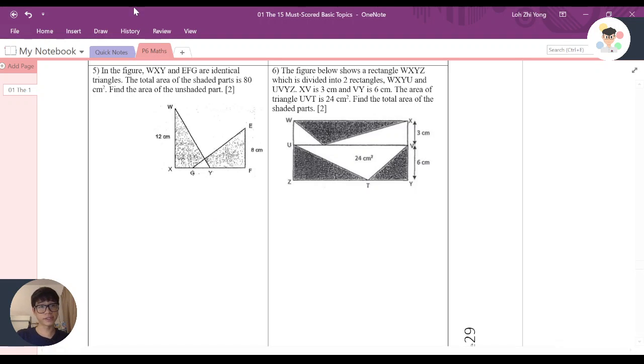Now, here it says that in the figure, WXY and EFG are identical triangles. The total area of the shaded parts is 80 cm squared, and it's asking to find the area of the unshaded part.